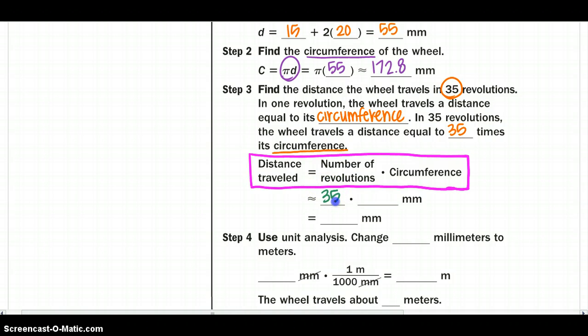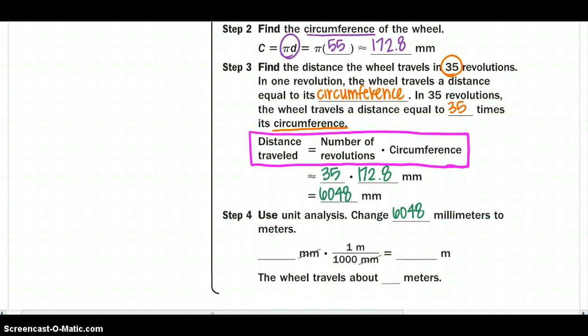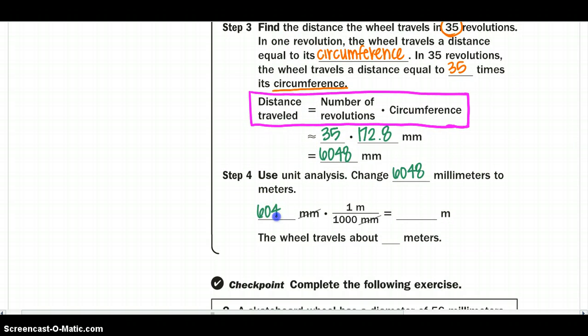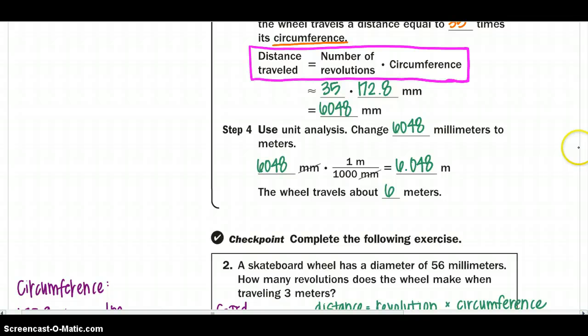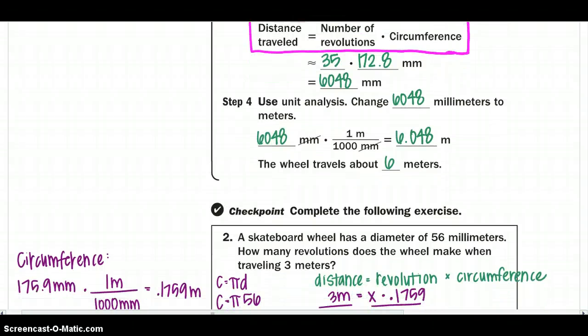So we are going to take the distance traveled equal to the number of revolutions times our circumference. So our number of revolutions is 35. And we are traveling, or our circumference is 172.8 millimeters. So we are at 6,048 millimeters. But now we have to change it into meters. So we will do our conversion, 6,048. One meter to a thousand millimeters will give me 6.048 meters. So the wheel travels about 6 meters in 35 revolutions.